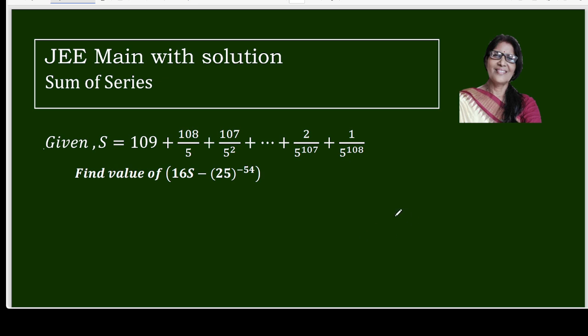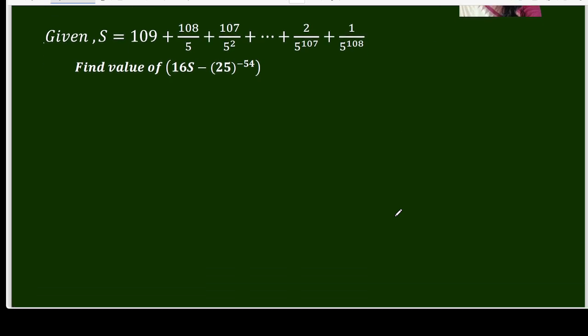Let's begin. It is given that S equals 109 plus 108 over 5 plus 107 over 5 square. The last but one term is 2 over 5 power 107 and the last term is 1 over 5 power 108.